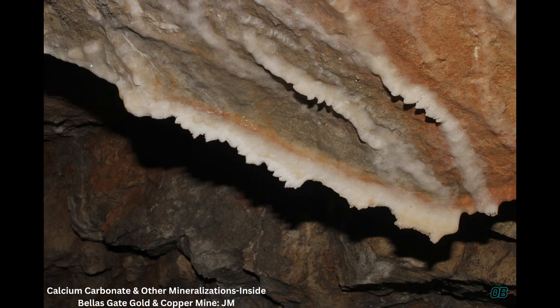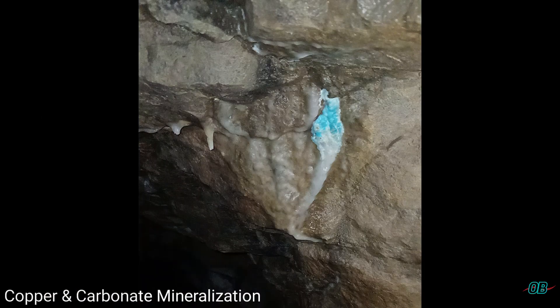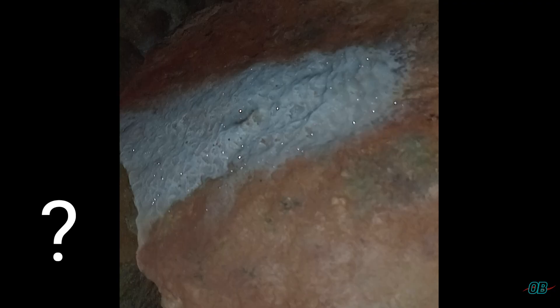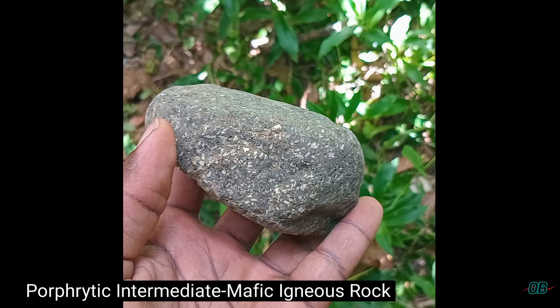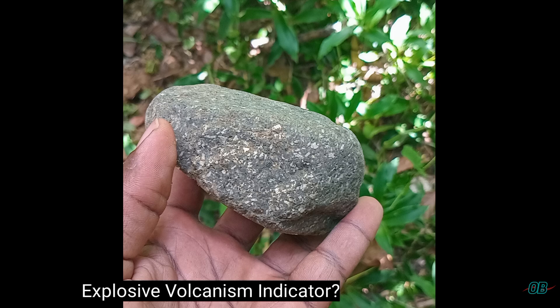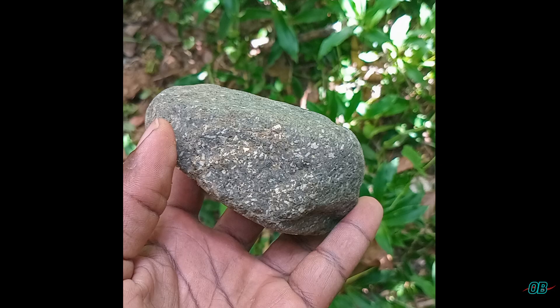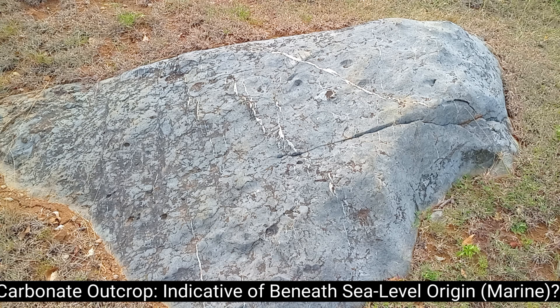What you can gather is that there exists carbonate crystals within the adit or the mine itself. There also exists copper crystals as well as minerals that I could not specifically identify whilst in the mine. Outside the mine, I observed intrusive/extrusive igneous rocks, such as this andesite or igneous rock with porphyritic texture.